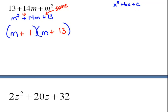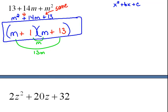Now, if that's true, when we do our inner and outer terms, they should combine to give us a 14. So here we have 1 times m is m, and m times 13 is 13m, and when you combine those, you do get a positive 14m. So this is our factorization.